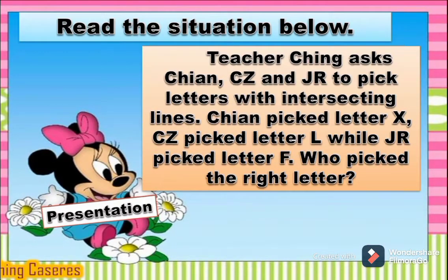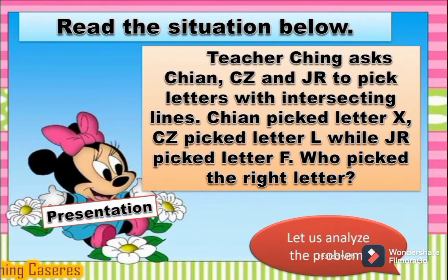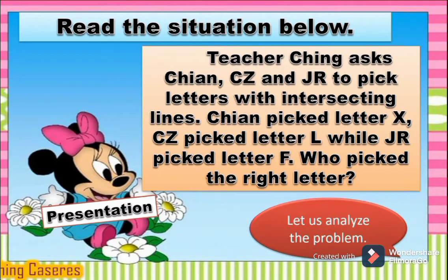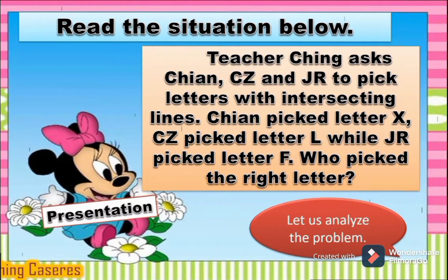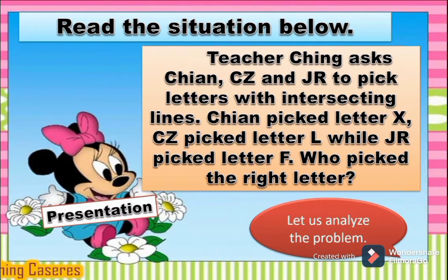I have here a problem. Can we read it all together? Teacher Ching asked Qian, CG, and GR to pick letters with intersecting lines. Qian picked letter X, CG picked letter L, while GR picked letter F. Who picked the right letter?